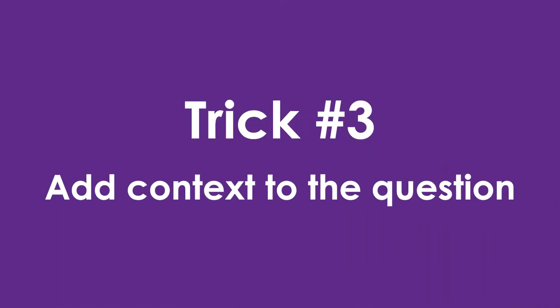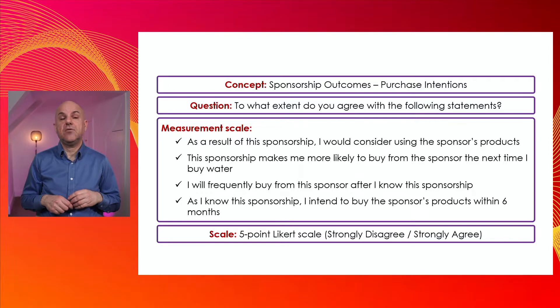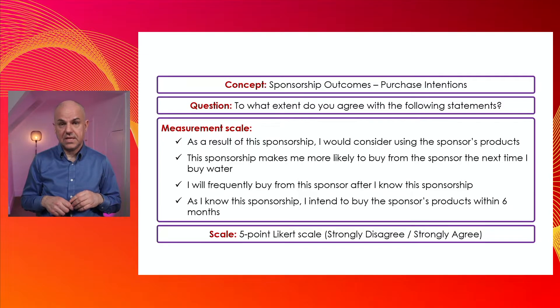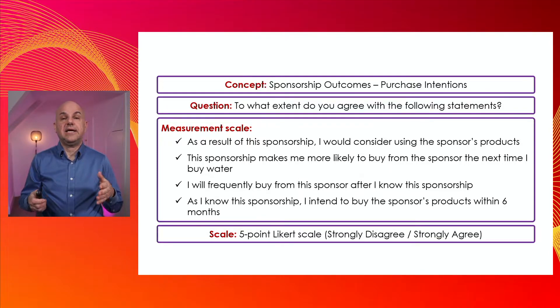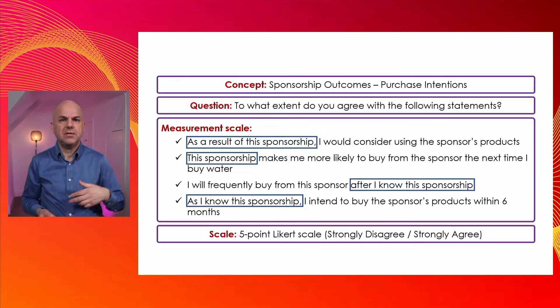The third trick is about adding context to the question. You always have a dilemma about whether to add the context to the question itself or to the statements — the items in the measurement scale. The example here is from a study on sponsorship outcomes, specifically purchase intentions. The question is: to what extent do you agree with the following statements? As you can see, the context is in the statement: 'as a result of the sponsorship,' 'after I know the sponsorship,' 'as I know the sponsorship.'